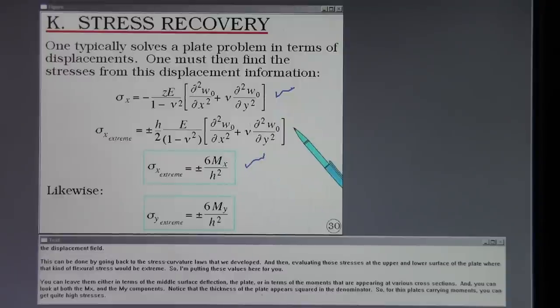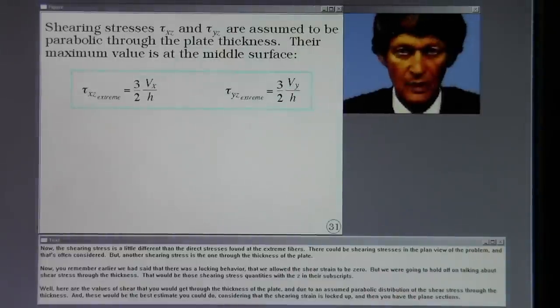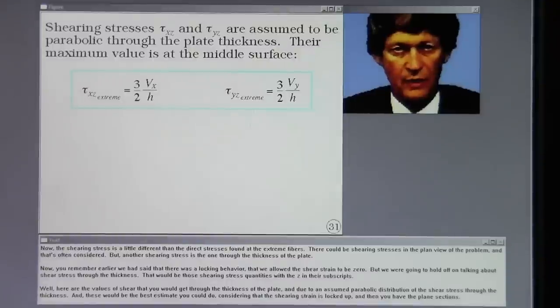So I'm putting these values here for you. You can leave them either in terms of the middle surface deflection of the plate, or in terms of the moments that are appearing at various cross-sections. And you can look at both the MX and the MY components. Notice that the thickness of the plate appears squared in the denominator, so for thin plates carrying moments, you can get quite high stresses.